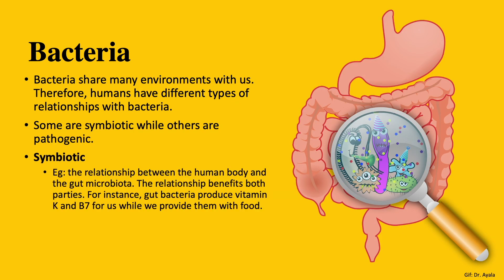Bacteria share many environments with us. Therefore, humans have different types of relationships with bacteria. Some of them are symbiotic while others are pathogenic. The best example of a symbiotic relationship between humans and bacteria is the relationship we have with our gut microbiome. The human gut is home to about 1 trillion bacteria. Some bacteria are good and some are bad, but overall the net result is positive. Both the human as well as the bacteria inhabiting the human gut are benefited in this type of relationship. For example, the gut bacteria produce vitamin K and B7, also known as biotin. Vitamin K is an important component in the blood clotting process. The benefit to bacteria is that humans provide them with food and a place to live.